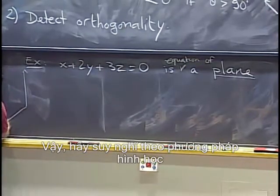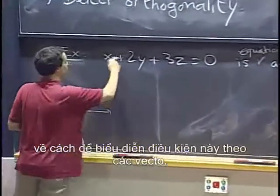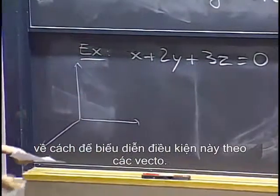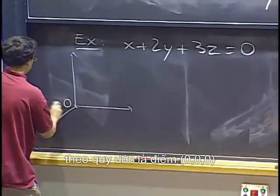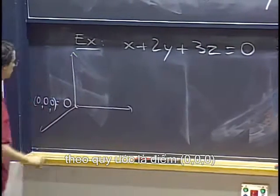Let's think geometrically about how to express this condition in terms of vectors. Let's take the origin O, by convention, is the point 0, 0, 0.